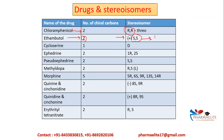The SS isomer of ethambutol is the anti-tubercular form, but the RR enantiomer causes toxicity — I'll leave it to you to find out what toxicity and post it in the chat box. With regards to cycloserine, it's the dextro isomer. For ephedrine, it is 1R,2S — the first stereocenter is R and the second is S. In pseudoephedrine, it is SS. For methyldopa, you again have RS, same as ephedrine.